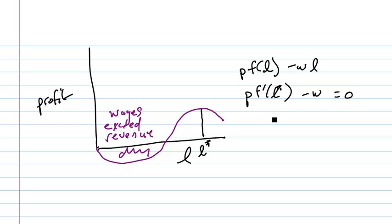So this is called the first order condition. The first order condition says that the derivative of the function at the maximum point is zero.